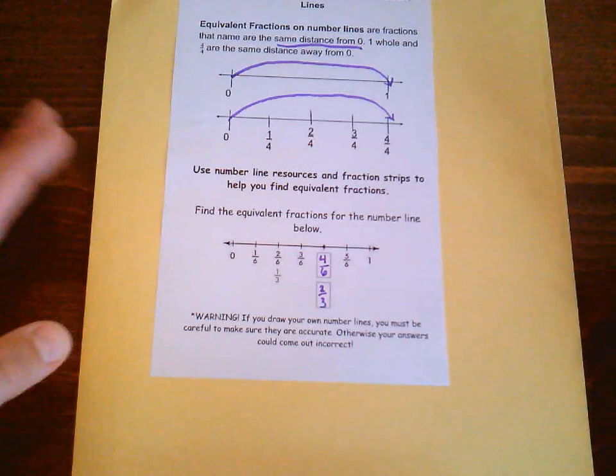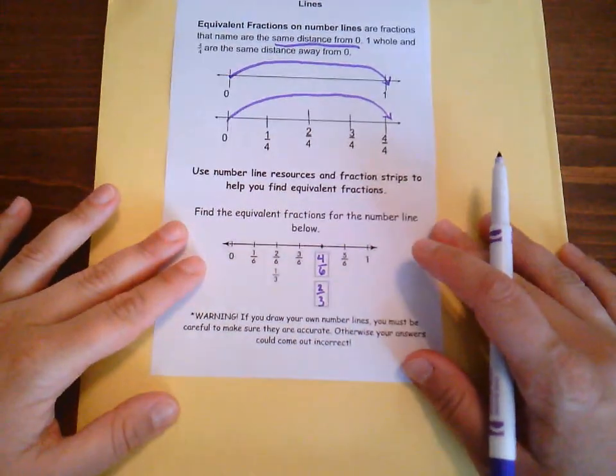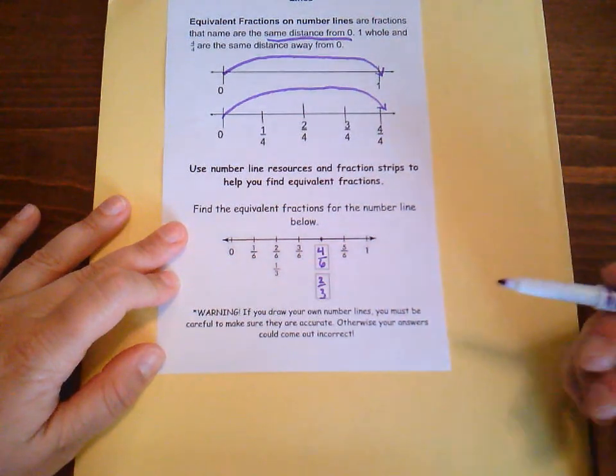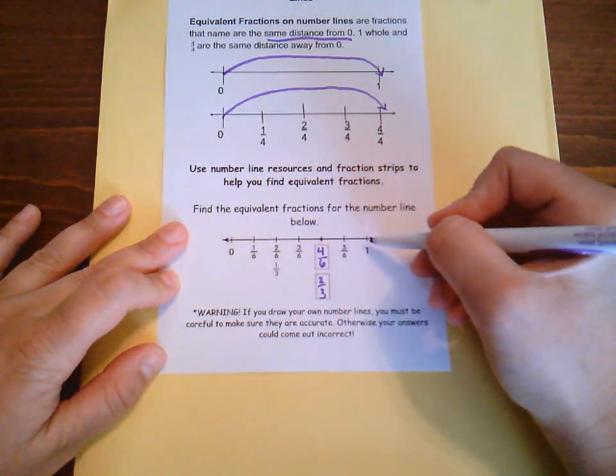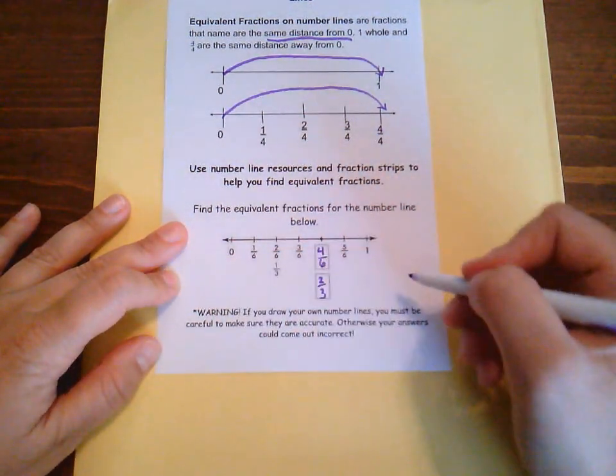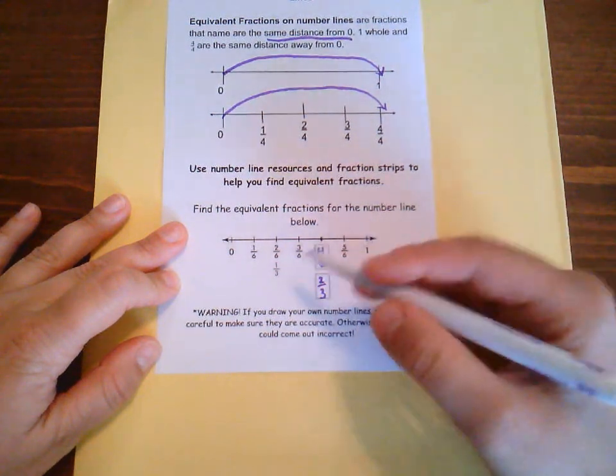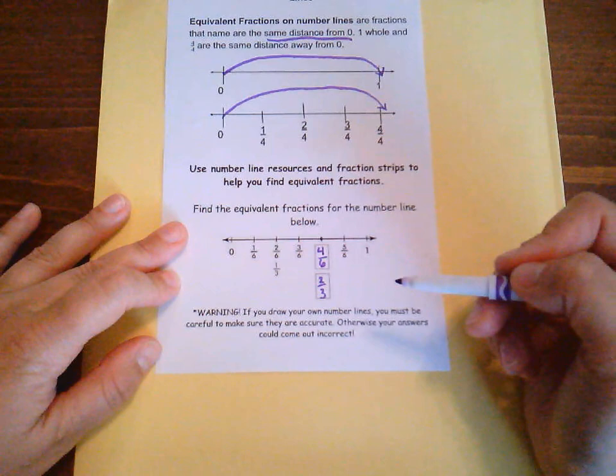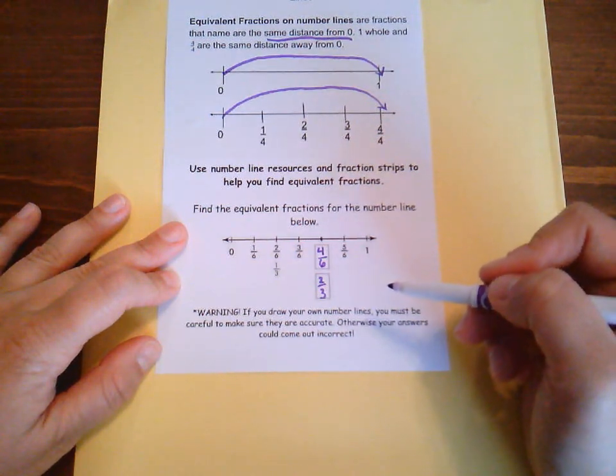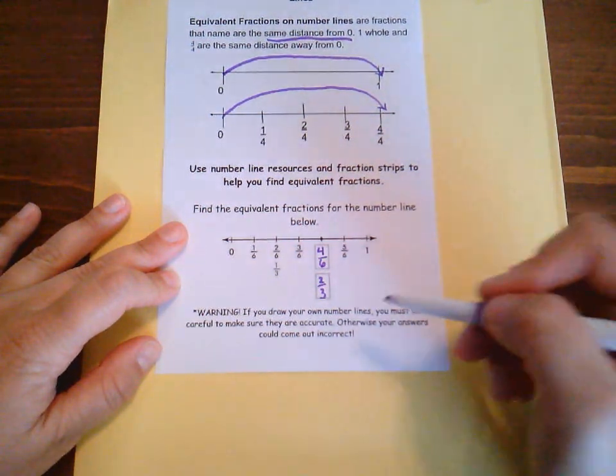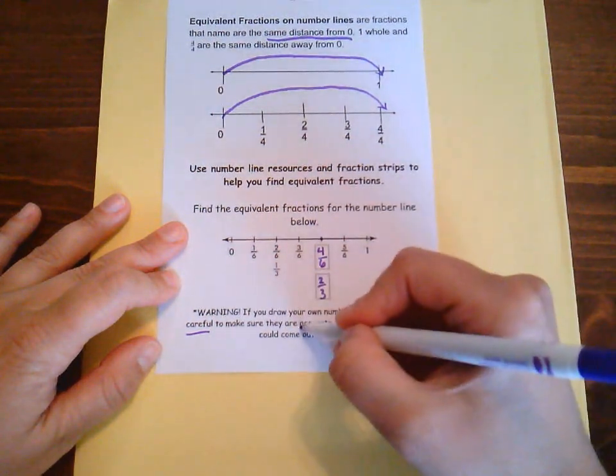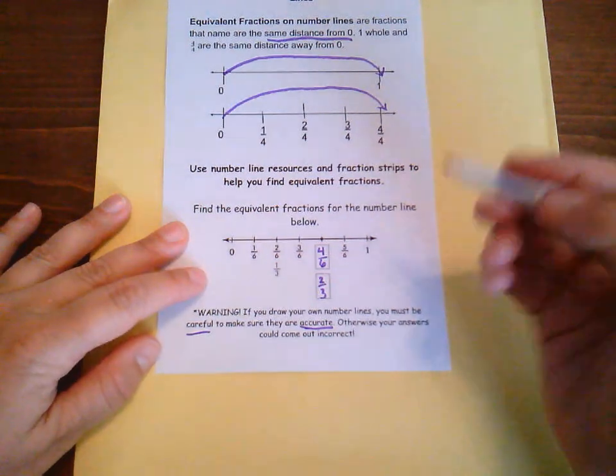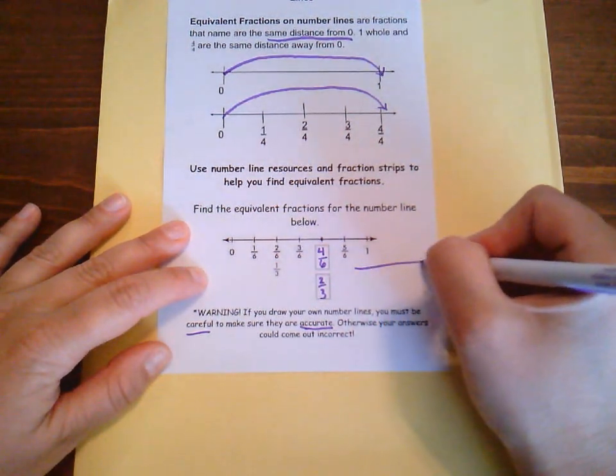Now, I highly recommend you using your fraction strip resource. However, if you ever don't have it, you can draw your own number lines. We know how to make a number line for sixths, where I do thirds and then sixths, and then to make my thirds, I would do the same thing we did in topic 12 when making thirds. Now, whenever you're making your own number lines, you need to be very careful to make sure that they're accurate. You have to be as neat as possible to make sure that you're breaking up your number lines.